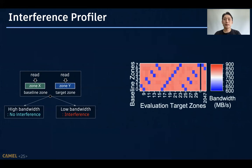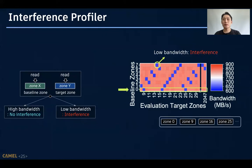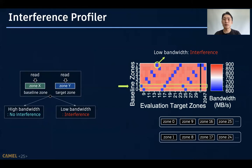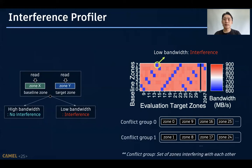And here is the result of the analysis that is performed on the real ZNS SSD. In this figure, blue points mean low bandwidth, so it means that there is interference between two zones on X-axis and Y-axis. From this figure, we can see that Zone 0 interferes with Zone 9, Zone 16, and Zone 25, while Zone 1 interferes with Zone 8, Zone 17, and Zone 24. We decided to call this set of zones which interfere with each other as conflict group.